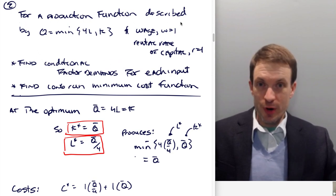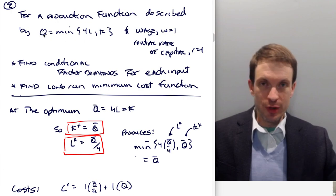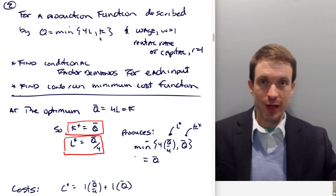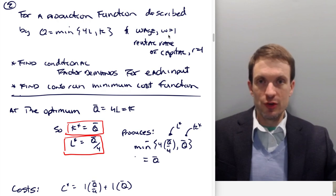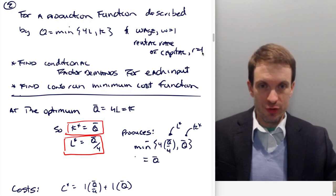So, for a production function described by the following production technology, the output is going to be whatever is a smaller of four times our use of labor and our use of capital. Assuming the wage is one, the rental rate of capital is one, find our conditional factor demands for each input and find the long run minimum cost function.